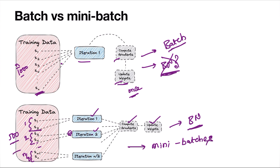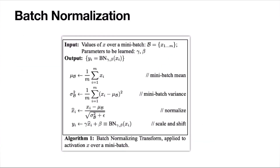Why do we use mini-batches? There are many reasons — one is that if your dataset is huge, loading everything into RAM is difficult. We usually use mini-batches during training, not the full batch. So although we call it batch normalization, it is actually operating on mini-batches.